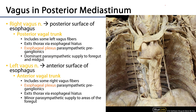These vagus nerves, after descending from the superior mediastinum, are now in the posterior mediastinum. They enter the posterior mediastinum posterior to the roots of the lungs — so posterior to the main stem bronchi and pulmonary arteries and veins. The left vagus nerve is going to take more of an anterior course, while the right vagus nerve is going to take more of a posterior course, and will have a much more posterior course as it is more distal along the esophagus.